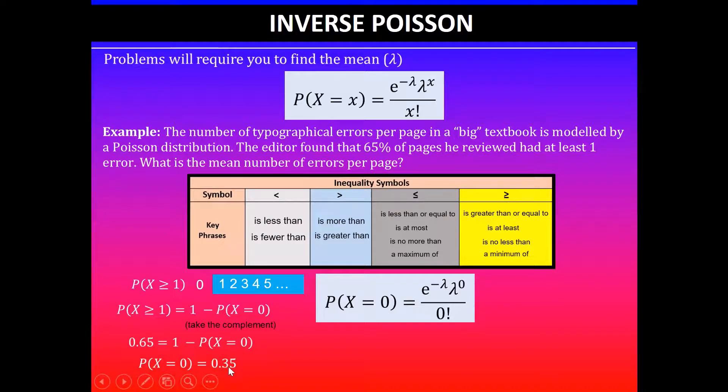So e to the power of minus lambda—and lambda is what I'm asked to calculate, it says mean number of errors—so e to the power of minus lambda, lambda to the power of x, and x is zero in this case.